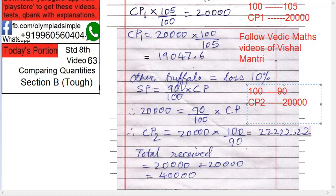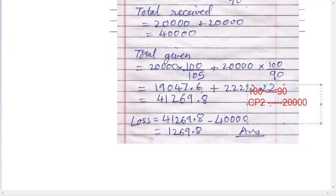What is the overall gain or loss? Add both cost prices. Total received: 20,000 plus 20,000 equals 40,000 — that's what the milkman received after selling the buffalos. Total given equals CP1 plus CP2: 19,047 plus 22,222 equals 41,269.8. So he gave 41,269.8 but only received 40,000. Since he gave more than he received, it's a loss. The total loss is 41,269.8 minus 40,000 equals 1,269.8.